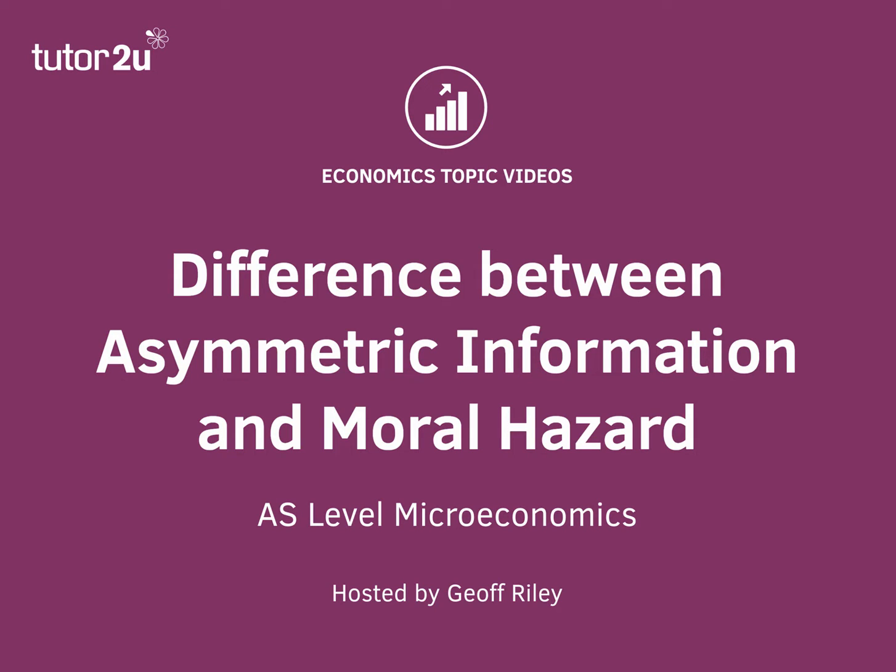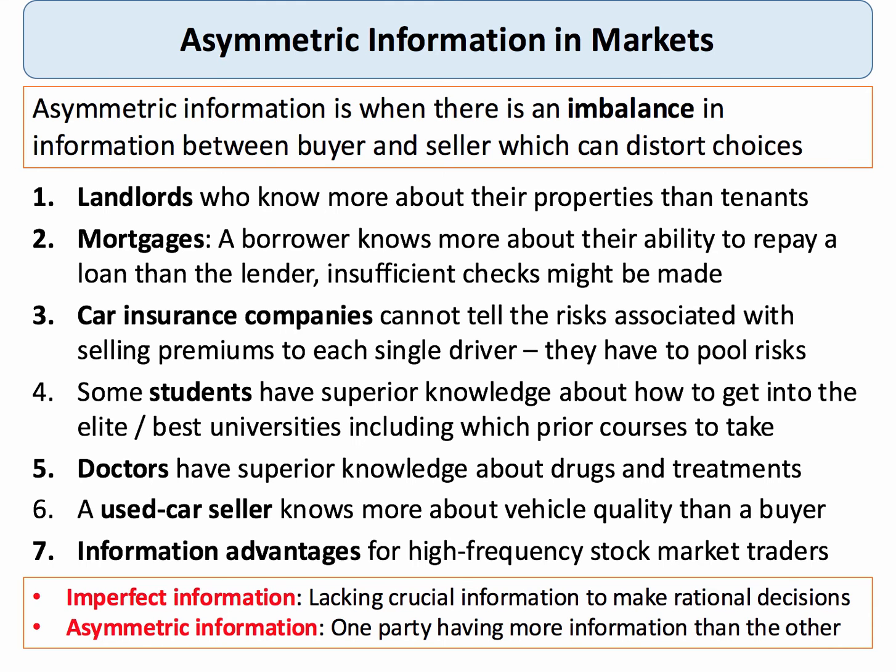Hi there, let's spend a couple of minutes thinking about the difference between asymmetric information and moral hazard. Asymmetric information is a type of information failure where there's an imbalance in the amount of information held by the buyer and the seller. This can distort the choices in the economy and lead to market failure.